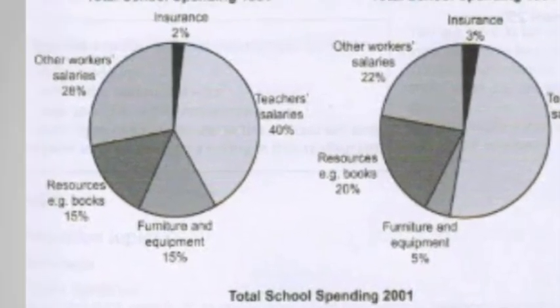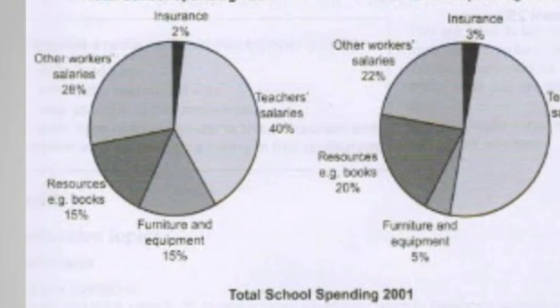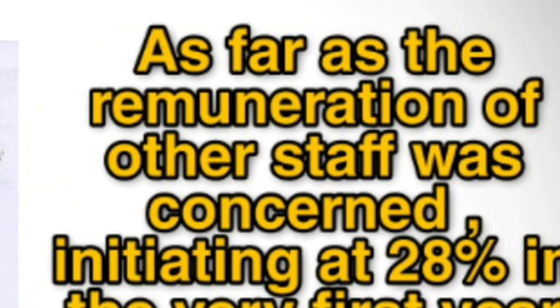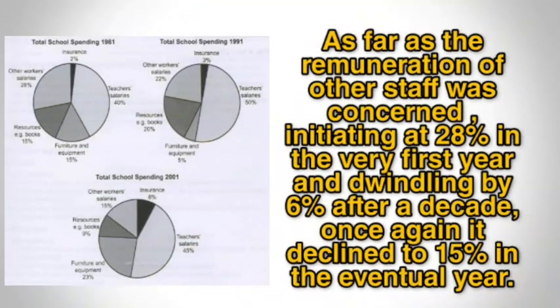The decline from 28% to 22% is 6%. So the structure is: starting at 28% in the very first year and dwindling by 6% after a decade — meaning one decade — then, once again it declined to 15% in the eventual year. If you use 'to', the simple percentage is stated; if you use 'by', you state the change amount.